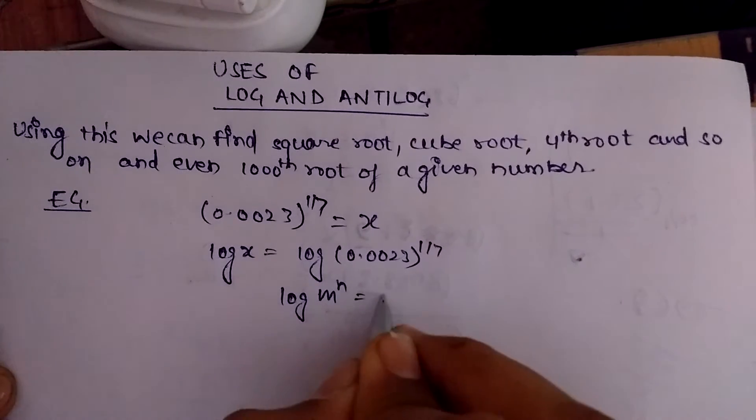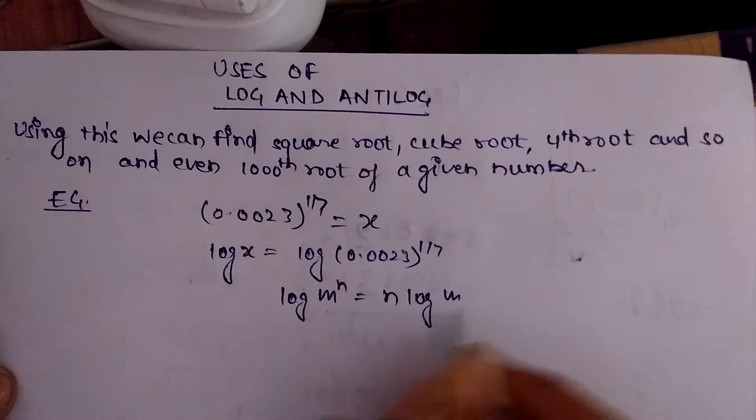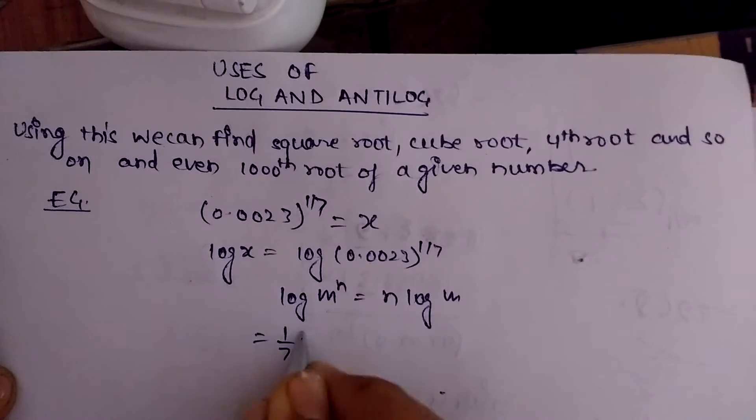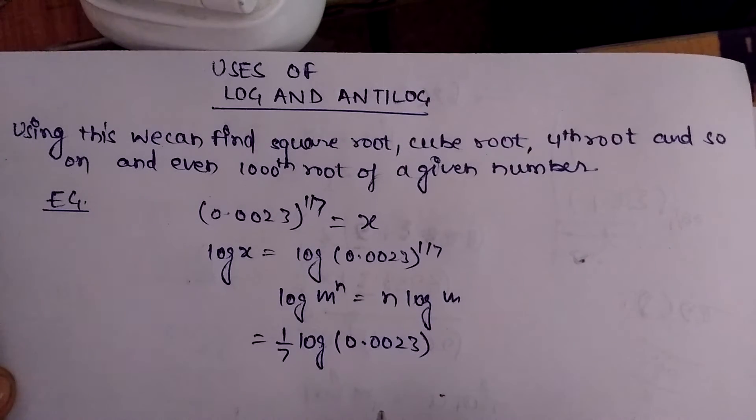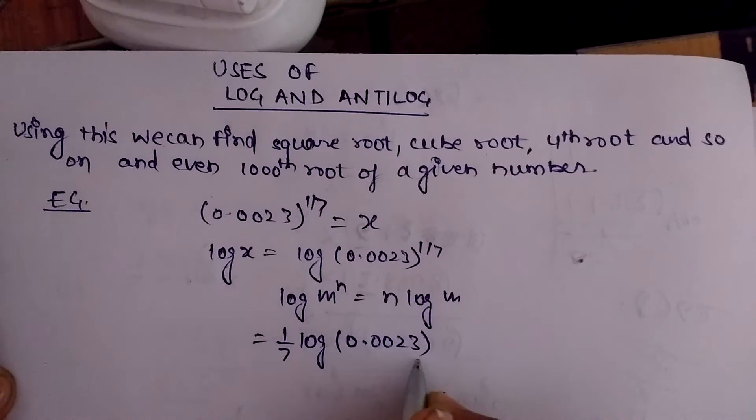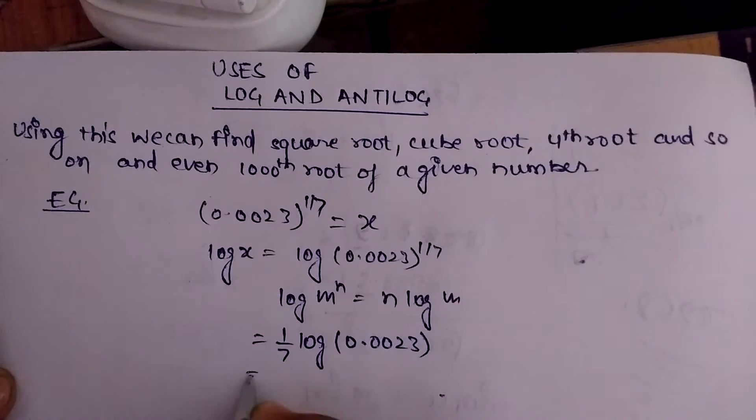So here using this, 1/7 log 0.0023. Log of this number we can find by using log tables, and the log of this number is 3̄.3617.